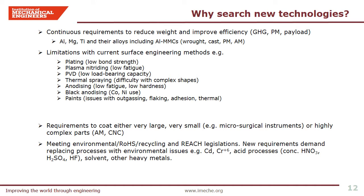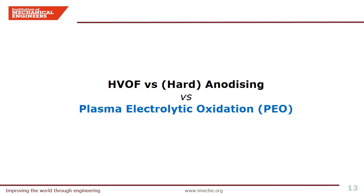We are always in continuous search of newer technologies because of requirements to reduce weight and improve efficiency. Limitations with current surface engineering methods, for example plating, plasma nitriding, PVD, thermal spraying, anodizing and paints, are well recognised. There are also requirements to coat either very large, very small, or highly complex parts manufactured by additive manufacturing. And finally, environmental legislations demand replacing processes with environmental issues such as cadmium, hexavalent chromium, acids, solvents and heavy metals. Now, let's talk about the most commonly used and competing processes for aluminum alloys such as HVOF, hard anodizing and plasma electrolytic oxidation.